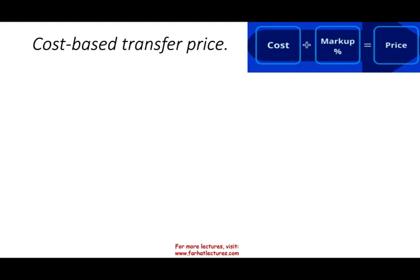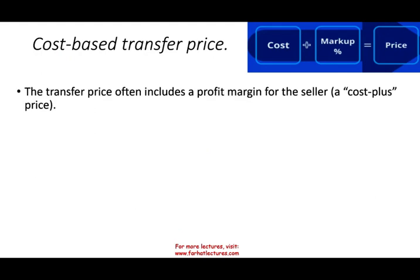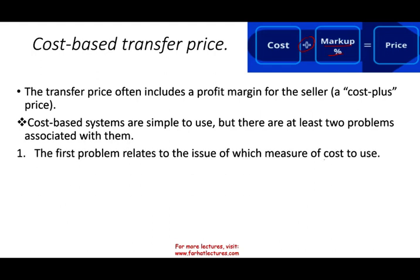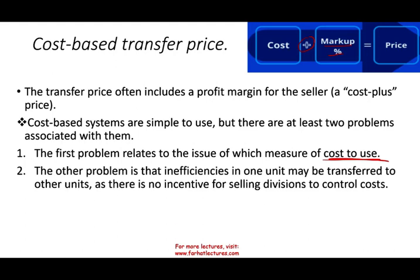The transfer price includes a profit — in addition to the cost, you include some sort of a markup or cost-plus to arrive at the price. Cost-based systems are easy to use because you just have to determine the cost. But the problem is that inefficiencies in one unit may be transferred to other units. If I'm selling you my product based on cost, whatever it costs me I'll transfer to you, which gives me no incentive to control my cost because you are going to pay me the cost regardless.